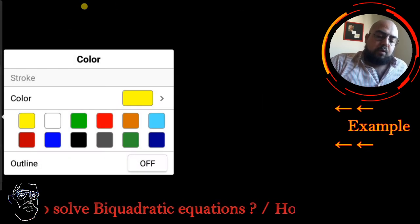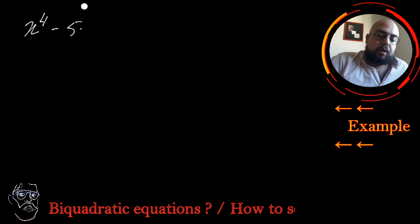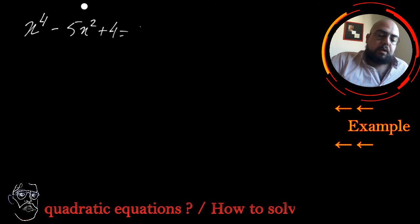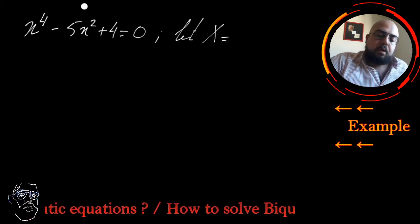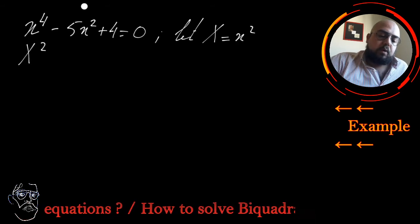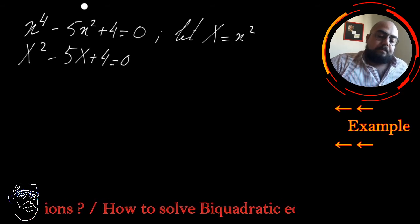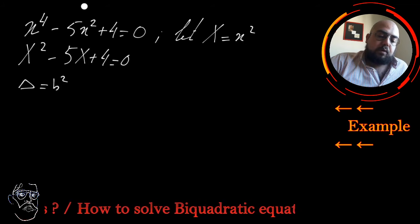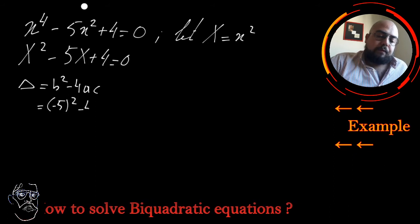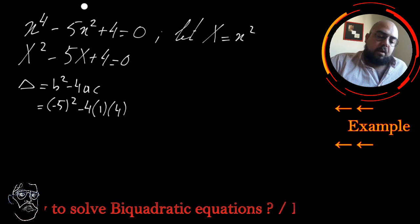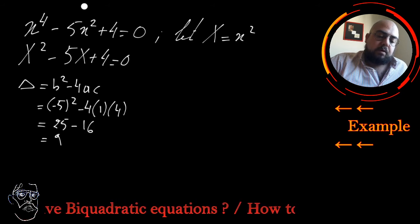One final example: x⁴ - 5x² + 4 = 0. Again, let capital X = x², so the equation is transformed to X² - 5X + 4 = 0. I will use delta: delta = b² - 4ac = (-5)² - 4 × 1 × 4 = 25 - 16 = 9. That's a positive value, so I will have two real distinct roots.